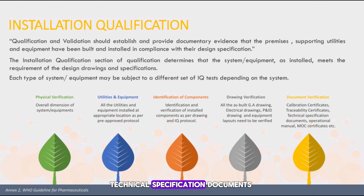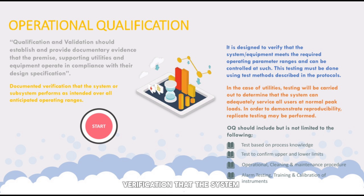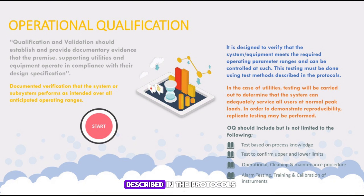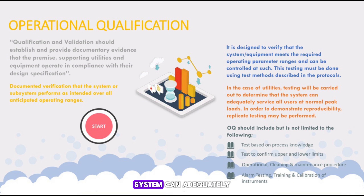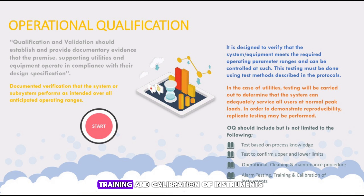What is Operational Qualification? OQ establishes and provides documentary evidence that the premises, supporting utilities and equipment operate in compliance with their design specification. It is documented verification that the system or subsystem performs as intended over all anticipated operating ranges. OQ verifies that the system or equipment meets the required operating parameter ranges. Testing must be done using test methods described in the protocols. For utilities, testing determines the system can adequately service all users at normal peak loads. OQ should include: tests based on process knowledge, tests to confirm upper and lower limits, operational and cleaning and maintenance procedures, and alarm testing, training and calibration of instruments.